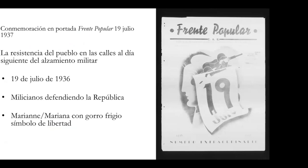One of the key values of these newspapers was the cover, particularly commemorating July 19th. This date is important because on July 18th, Franco and other military members ousted the democratic government, and on the 19th, the people went to the streets to defend the republic and democracy — a resistance that lasted three years with very little international help.